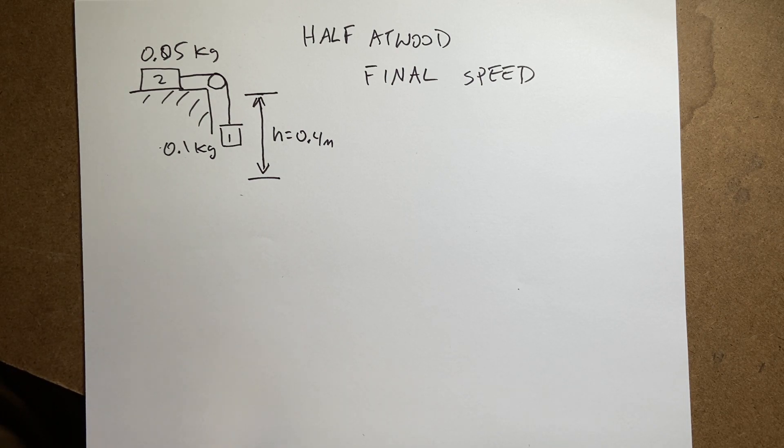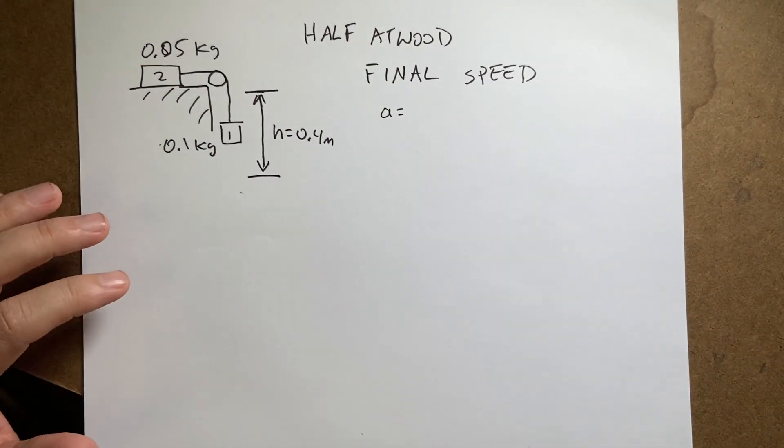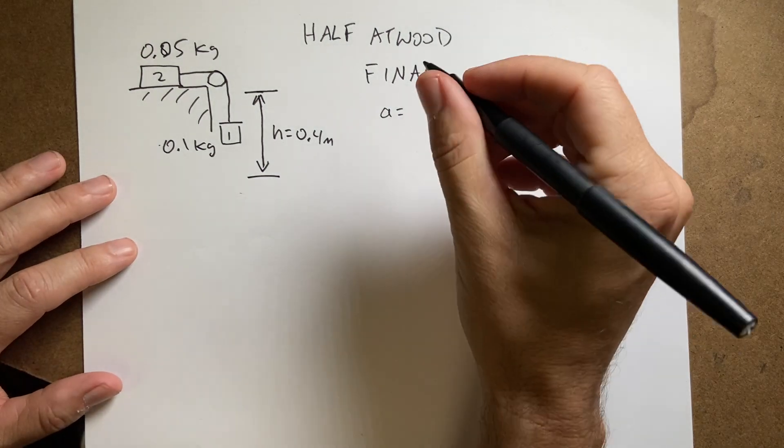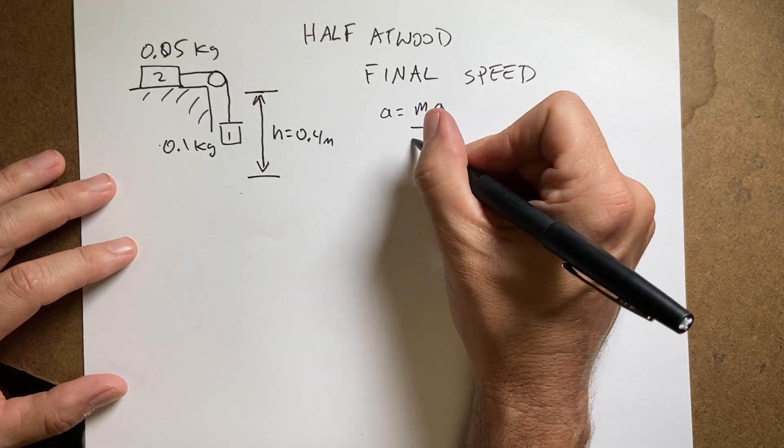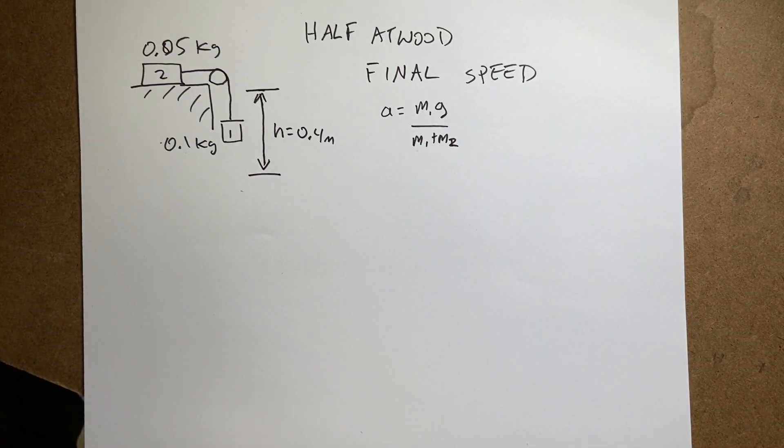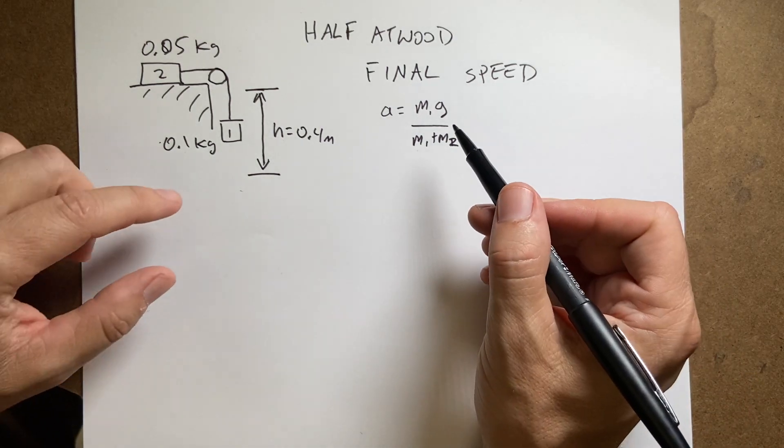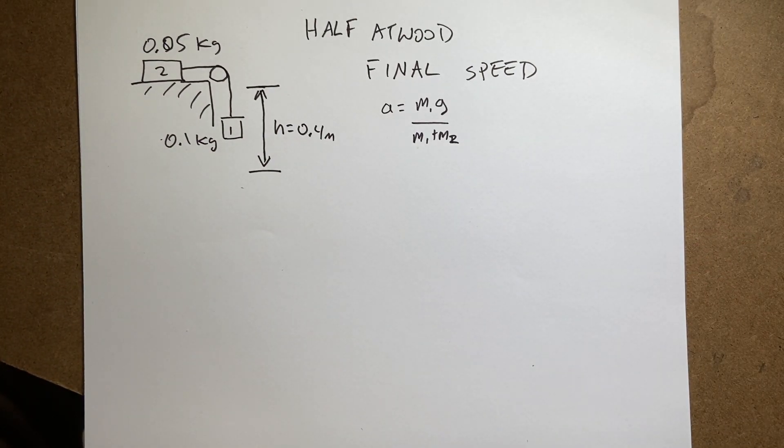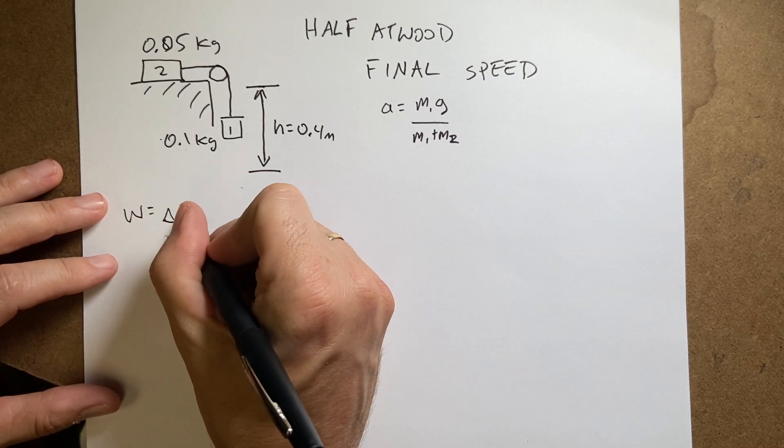Okay, so previously I had an expression for the acceleration. What was that acceleration? I think it was, there it is. A is m1g over m1 plus m2. I derived that in a previous video and you can link to that down below if I remember to put that there. So if I know the acceleration and the distance, I technically could use the kinematic equations, but I'm going to do this completely differently. I'm going to use the work energy principle.